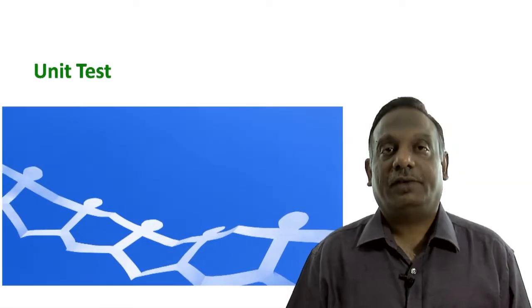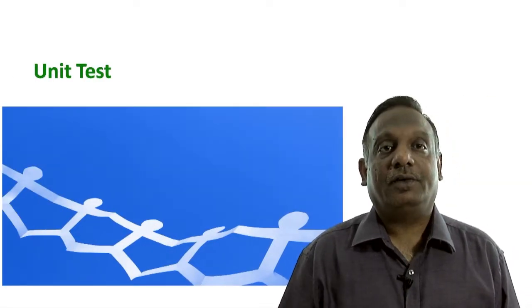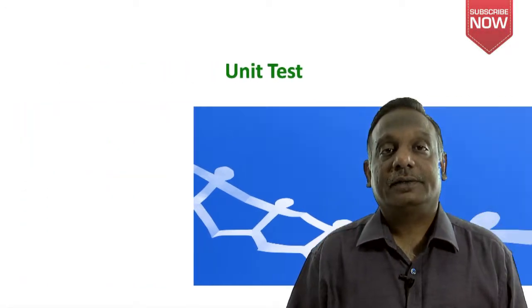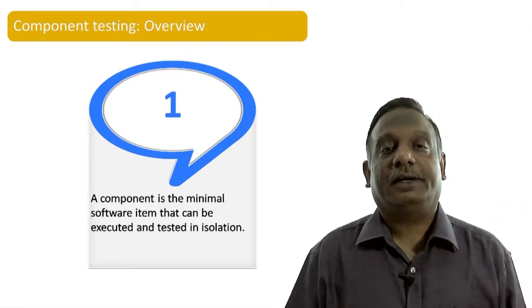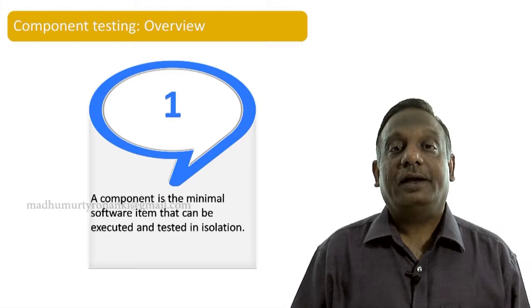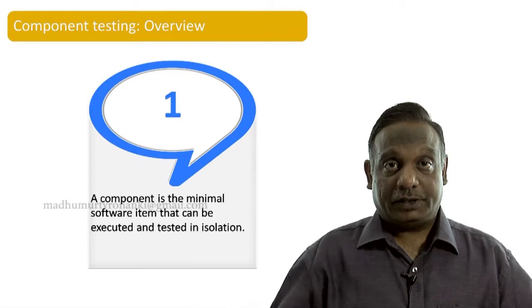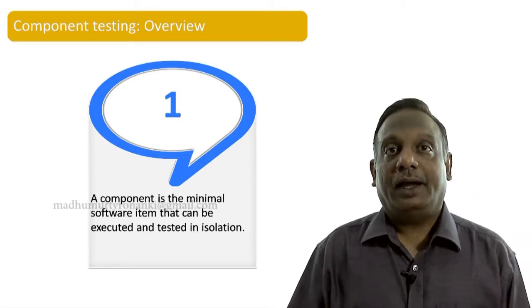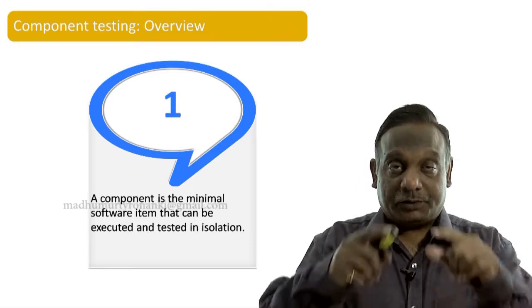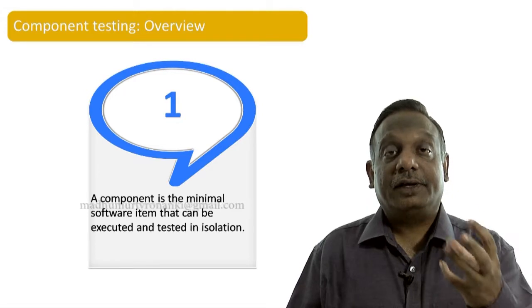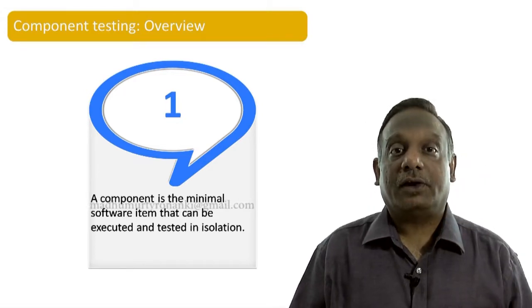Welcome again. In this video lesson, let us learn about the first test level, that is unit level, also called component level. A component is a minimal software item that can be executed and tested in isolation. Every developer in a software project develops one program at a time, and that program has to be tested in isolation to validate whether it is meeting its code specification or not.